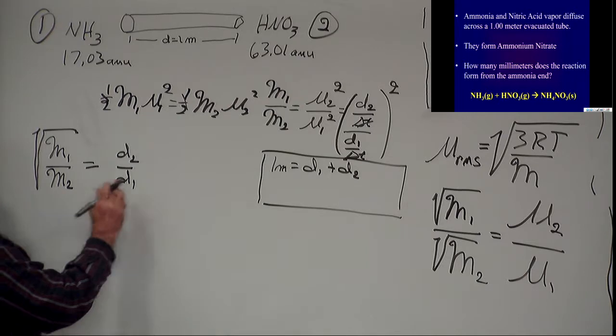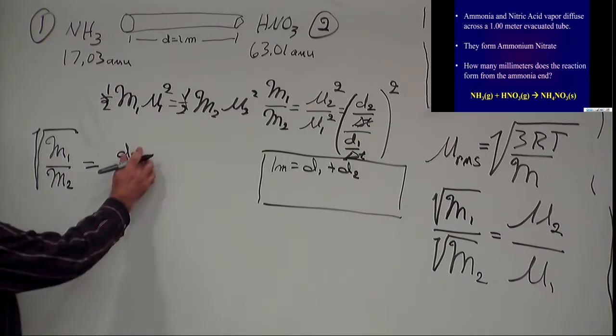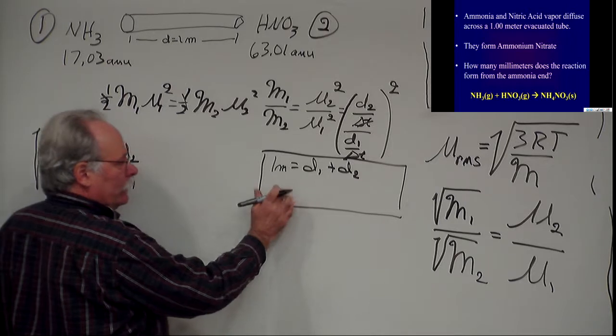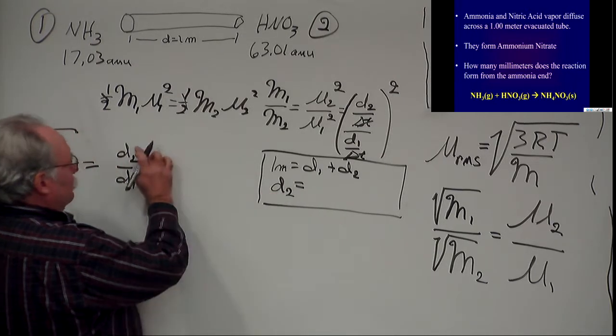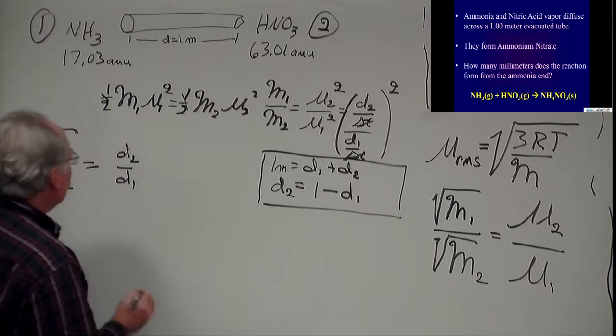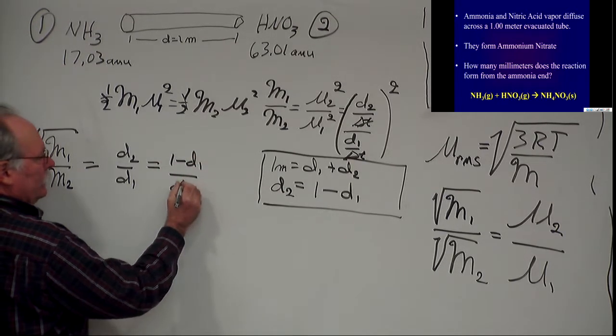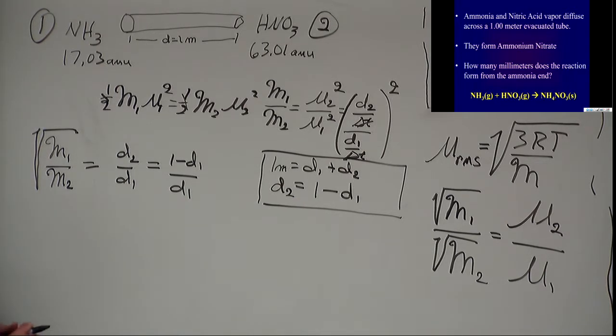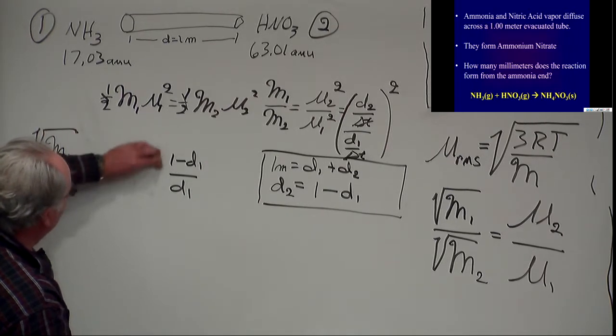And this is equal to the distance of the second object over the distance of the first object. And these were squared. But when I take the square root, it becomes D2 over D1. Now, I want to solve the distance of ammonia and I'm calling ammonia my first object, D1. So I need to cancel out the D2. So I go to my second equation and I solve my second equation for D2. Now that I know I solved this, I can substitute in here. So D2 is equal to 1 minus D1. So I now can come over here and say this is equal to 1 minus D1 over D1. Now I have one equation.